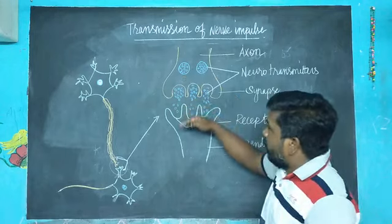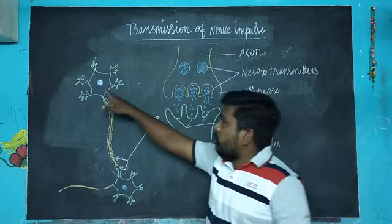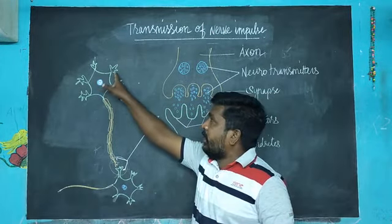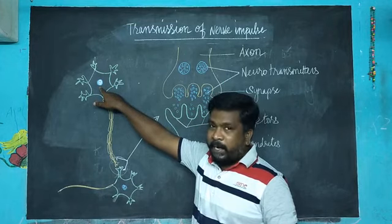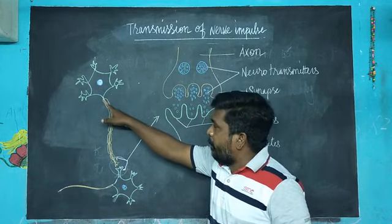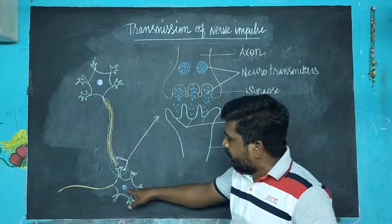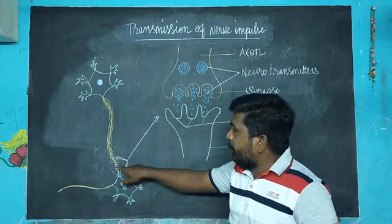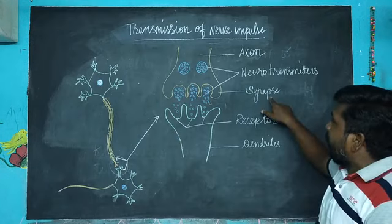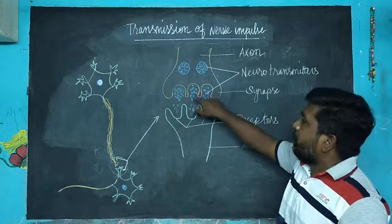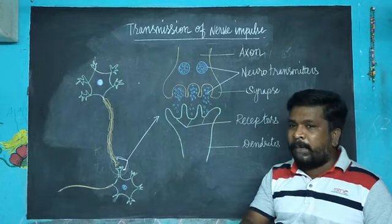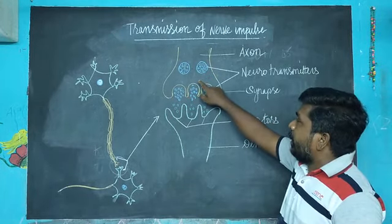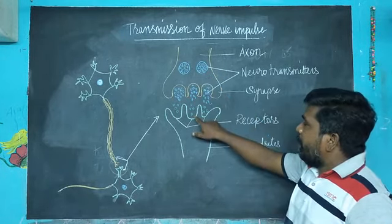When the neuron receives a signal through the dendrites, it goes to the cell body. Through the cell body, the impulses will be transferred to the next neuron through the axon. The tip of the axon is called the synapse and it contains nerve endings. Neurotransmitters which will be transferred to the next neuron.